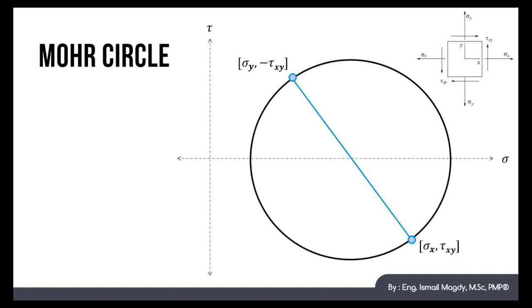We can calculate now the location of the center of this circle, which based on this drawing, will equal sigma x plus sigma y over 2. And now we can see that the maximum shear stress in the element will equal R, which is the radius of Mohr's Circle.